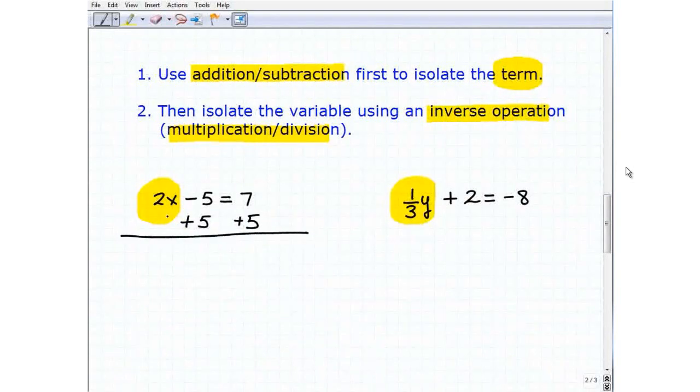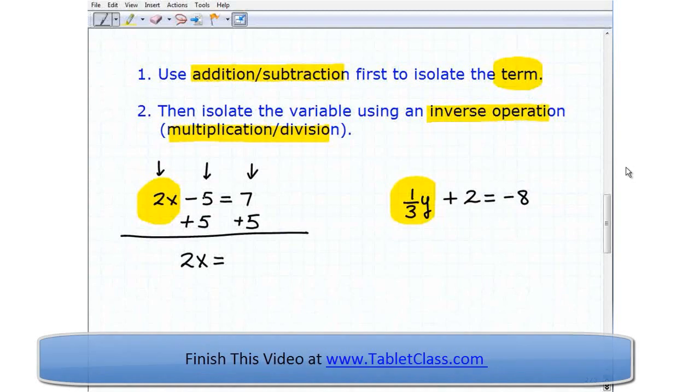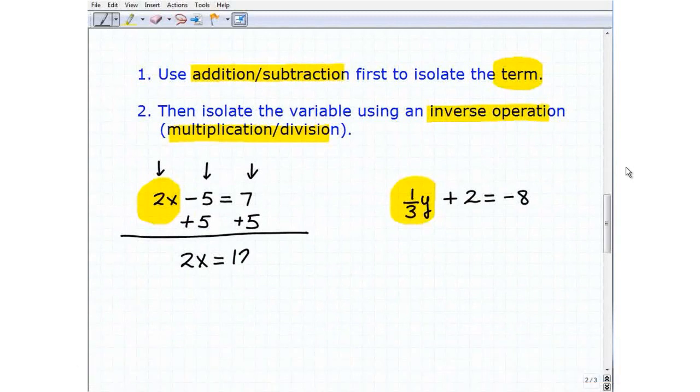So it's kind of like I'm solving for 2x. So when I add down, just as we talked about the format when we're solving one-step equations, I'm going to get 2x plus nothing is 2x. Negative 5 plus 5 is 0, so that goes away. And then I get 7 plus 5, and that's going to be 12.